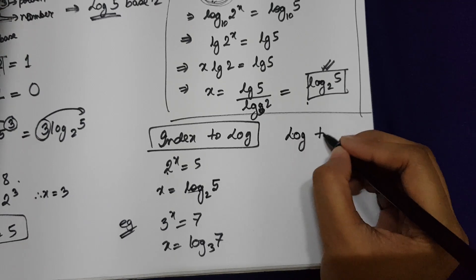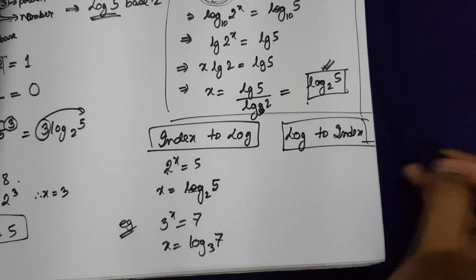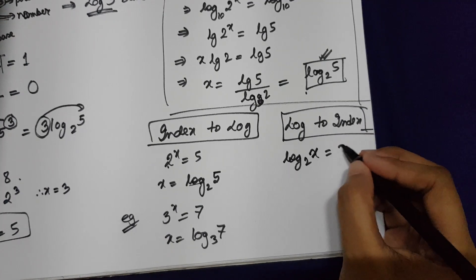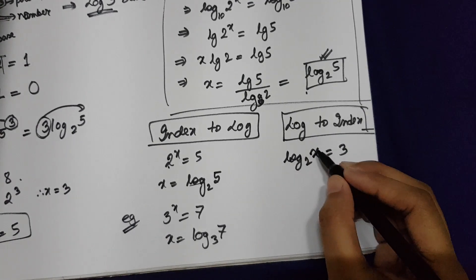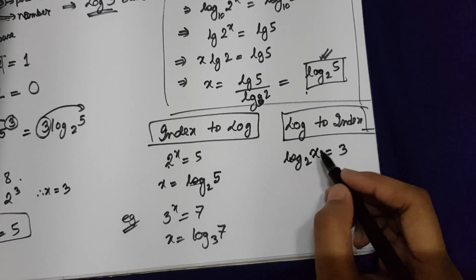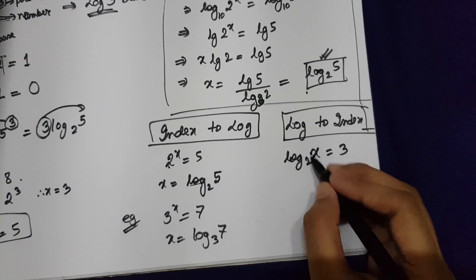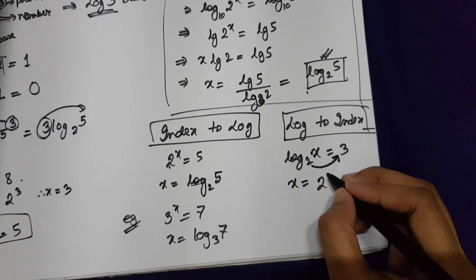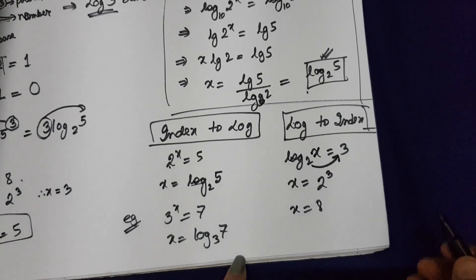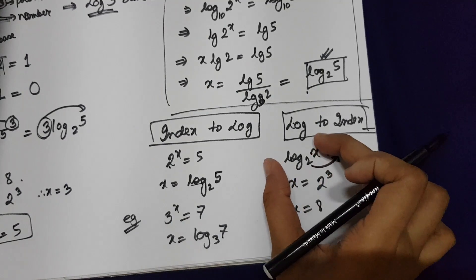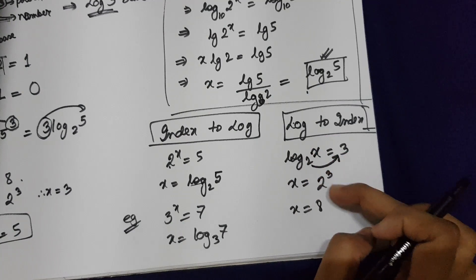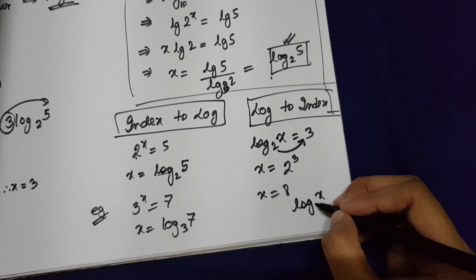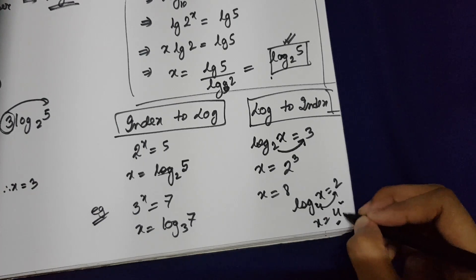If you need to convert log to index form — that is the inverse — for example, you have log x base 2 equals 3 and you need to find the value of x. Whenever you subject the number of the log, that is x, the base will move to the right side and shift the number as a power, so the final answer becomes x equals 2 cubed, which is 8. For example, log x base 4 equals 2, then x becomes 4 squared, that is 16.